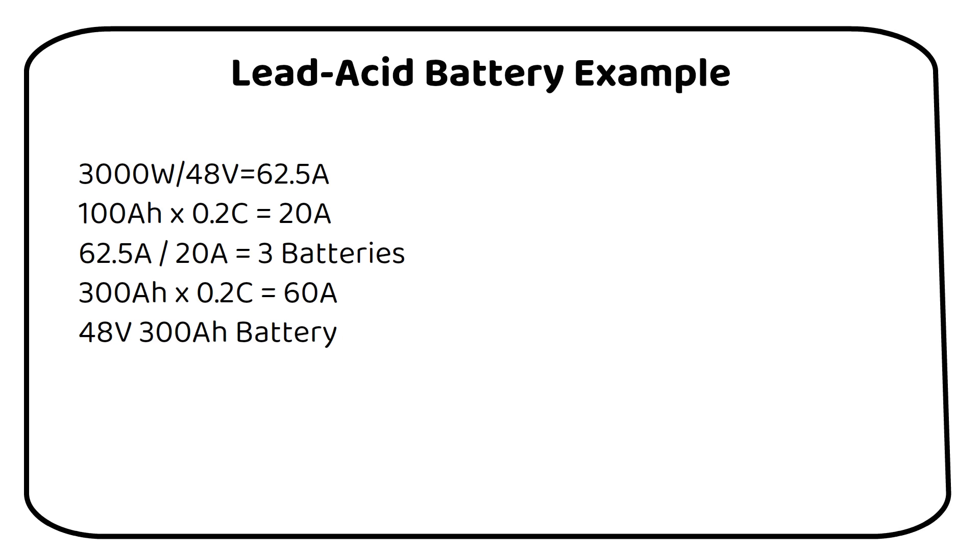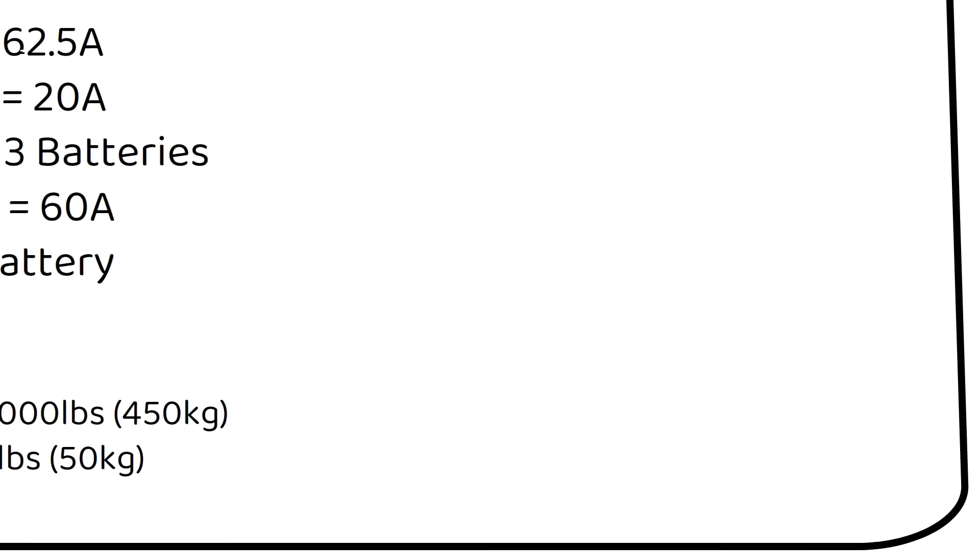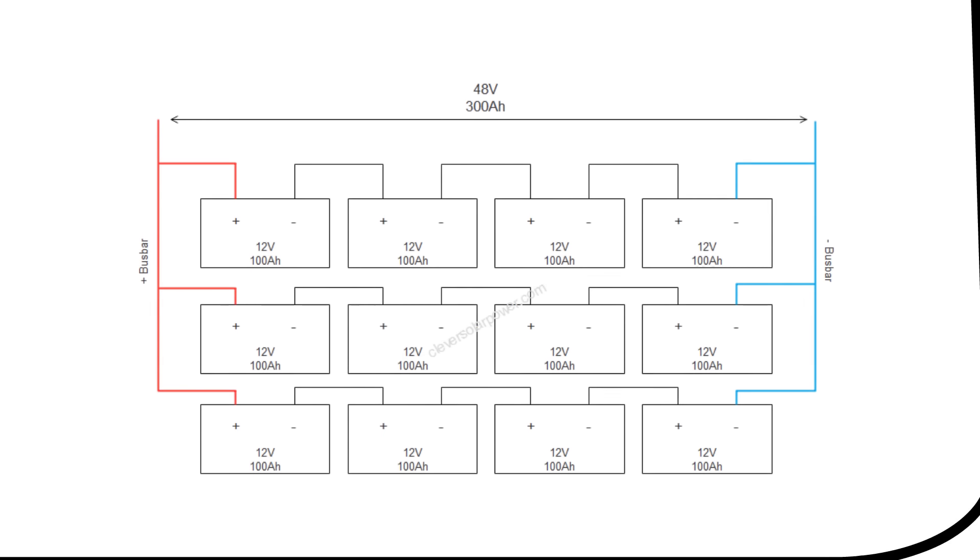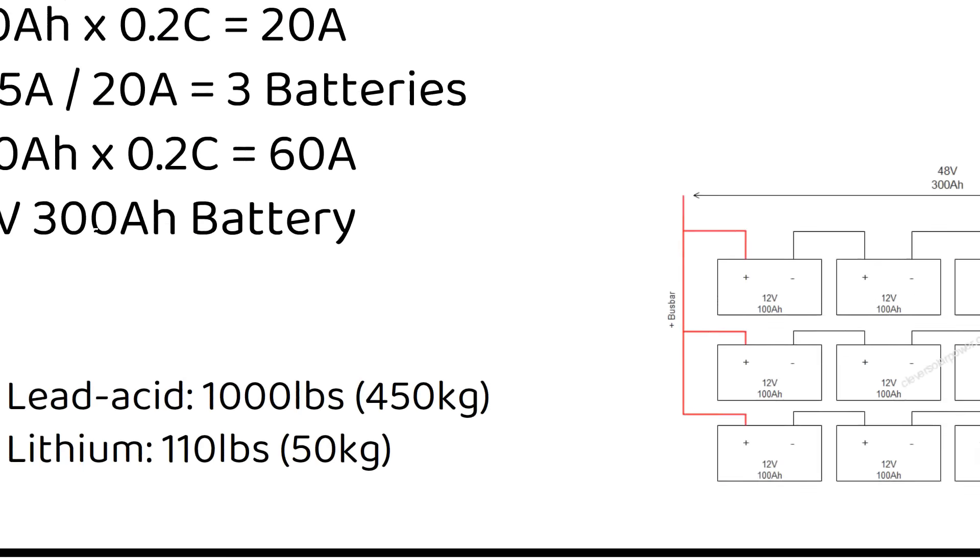We need a 48 volt 300 amp hour lead acid battery to effectively power a 3000 watt inverter. This is 3 times the size than lithium and will weigh 1000 pounds compared to 110 pounds for lithium. A possible battery configuration is four 12 volt 100 amp hour batteries in series and then paralleled with two other strings for a 4S3P battery.